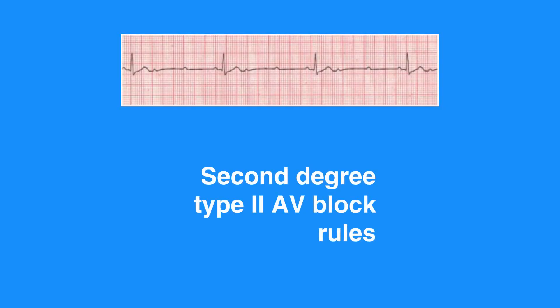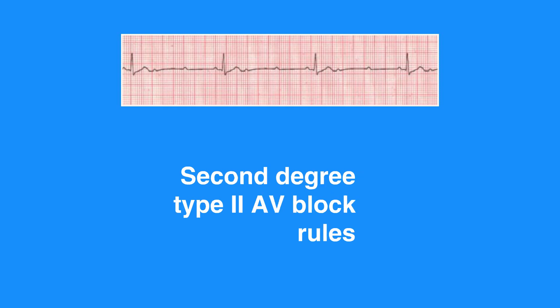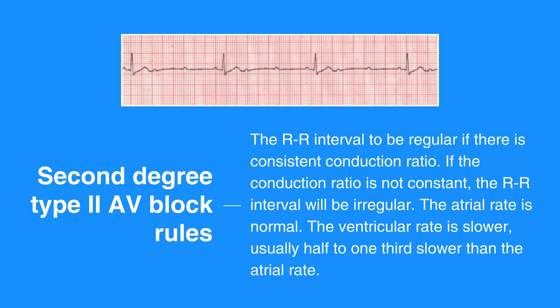Second degree type 2 AV block or Mobitz II rules include the RR interval to be regular if there is a consistent conduction ratio. If the conduction ratio is not constant, the RR interval will be irregular. The atrial rate is normal. The ventricular rate is slower, usually half to one-third slower than the atrial rate. P waves are upright and uniform. There is not a QRS following every P wave. The PR interval can only be measured on conducted beats and is usually constant across the strip. It may or may not be longer than a normal PR interval of 0.12 seconds. The QRS complex measures less than 0.12 seconds.